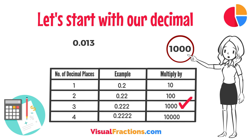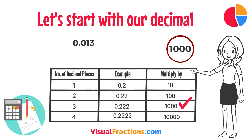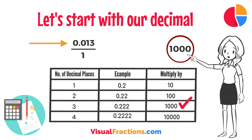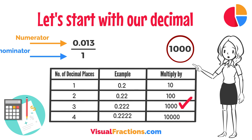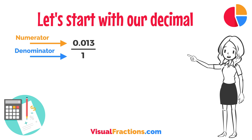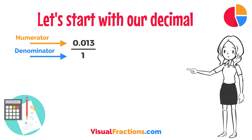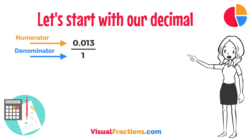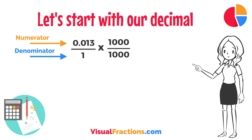To convert this decimal into a fraction, you initially put 0.013 over 1, essentially treating the decimal as the numerator in a fraction where the denominator is 1. This sets up the conversion process where we multiply both the numerator, 0.013, and the denominator, 1, by 1,000 because there are three decimal places.